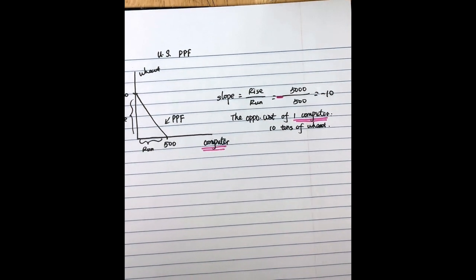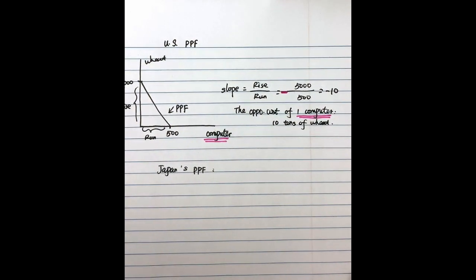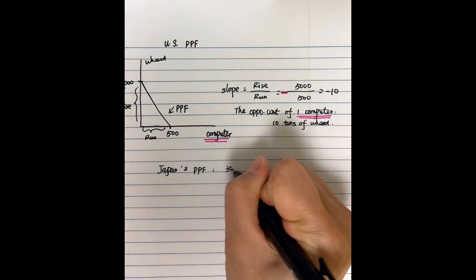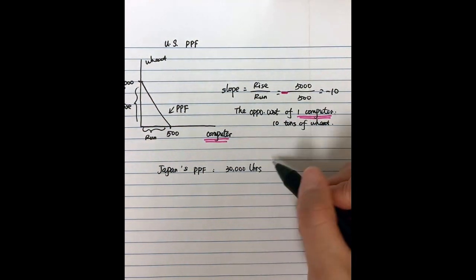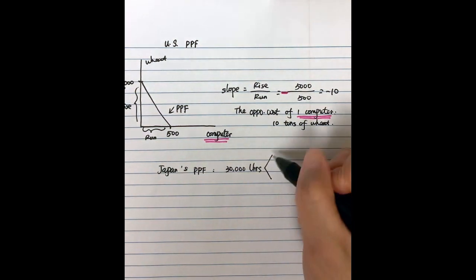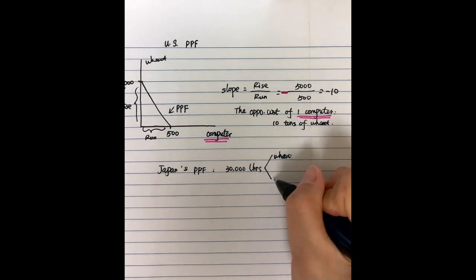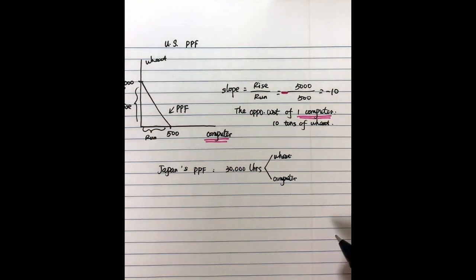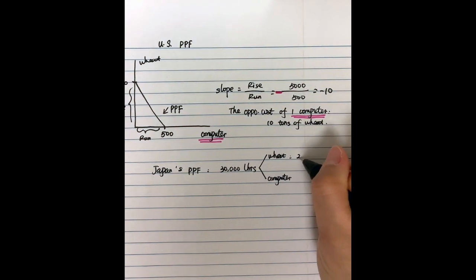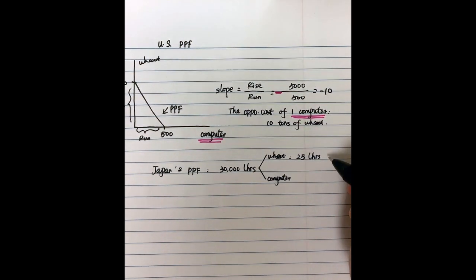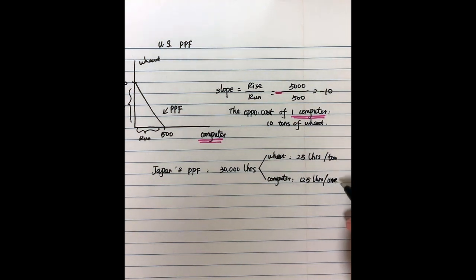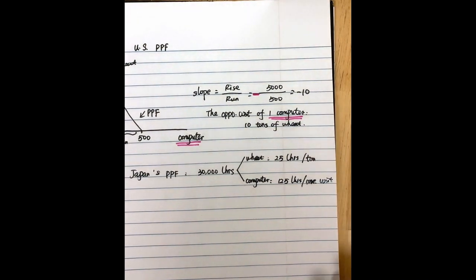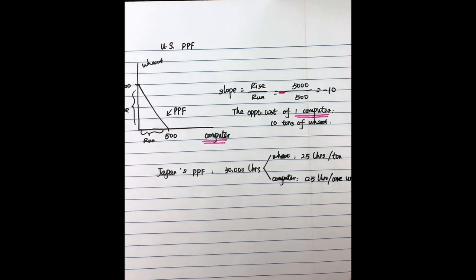Now let's look at Japan's PPF. We assume Japan has a total of 30,000 labor hours available — those are the fixed resources. These 30,000 labor hours can be used to produce wheat or computers. Each ton of wheat needs 25 labor hours, and each computer requires 125 labor hours.